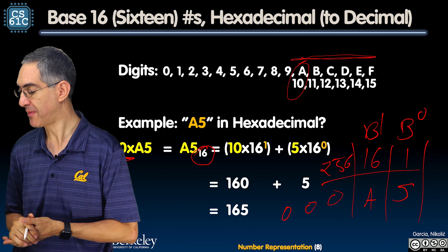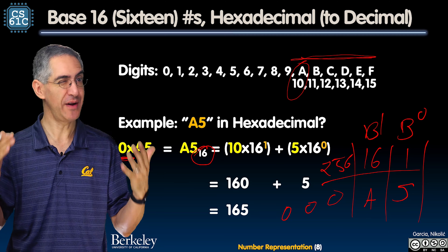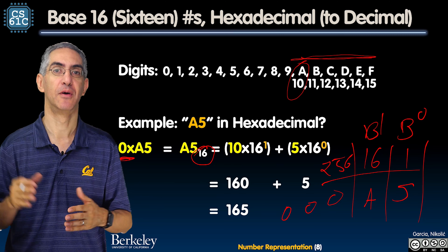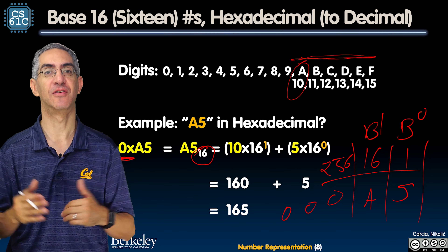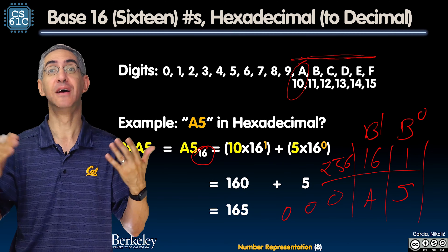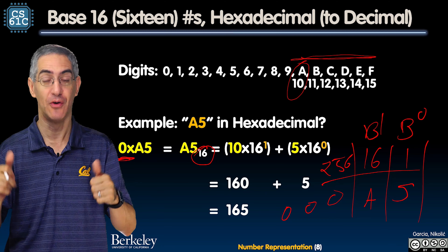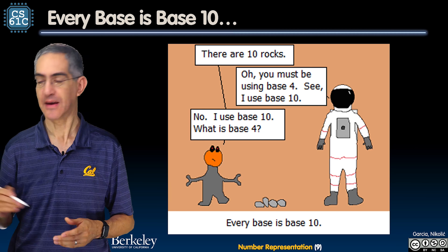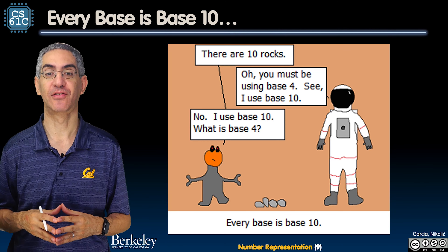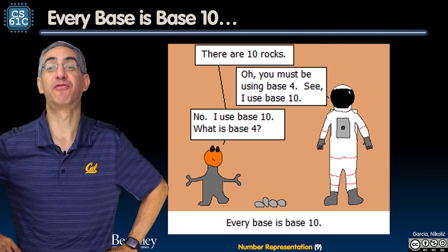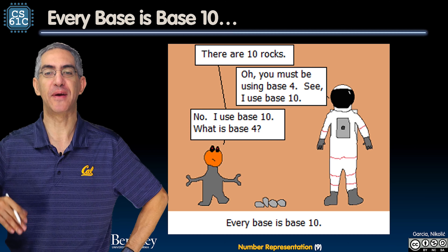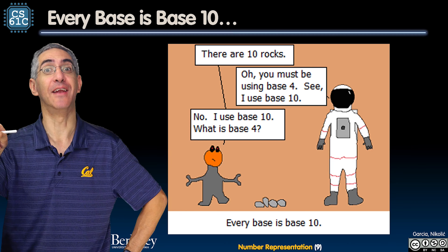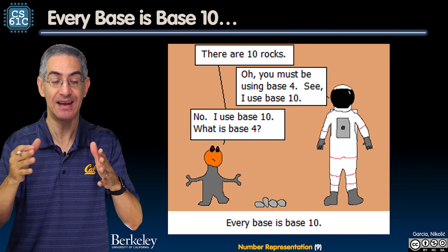How do we do this? The same way as base ten. Going back to the earlier slide: ten to the zero, ten to the one, ten to the two, ten to the three — the base to some power gives a column heading. In binary, we take base two to different powers. So: one, two, four, eight. I write my number 1101, and the column heading times the value below it gives: one eight, one four, no twos, and one one.